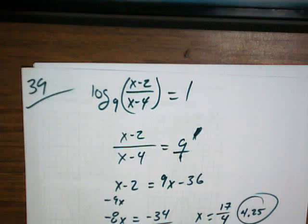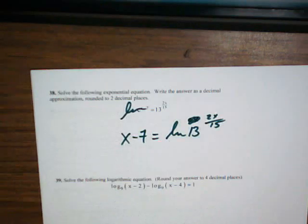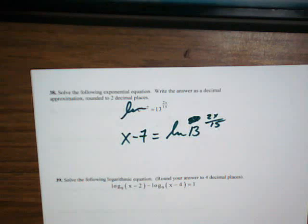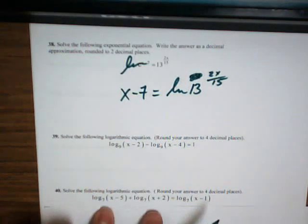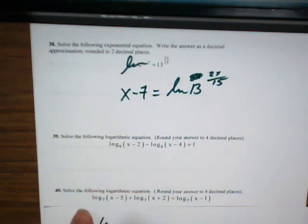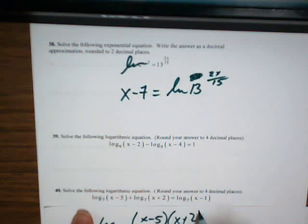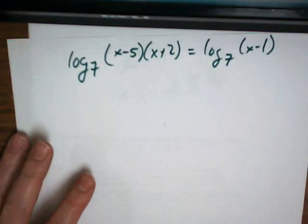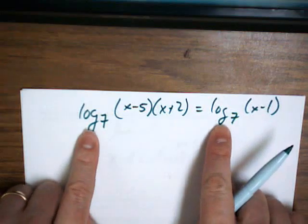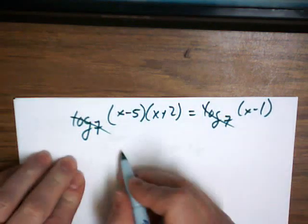The next question. Number 40 is going to be similar to that. I'm going to put these logs together with multiplication. So it's log base 7 of (x minus 5)(x plus 2) equals log base 7 of (x minus 1). Since these are the same logs, you can just cancel them off. I'm going to multiply this out.